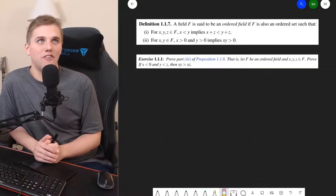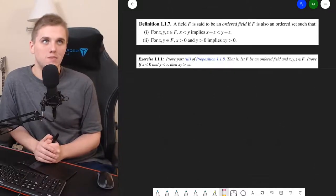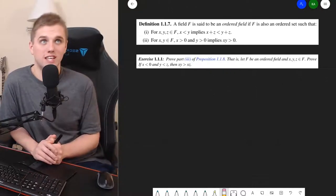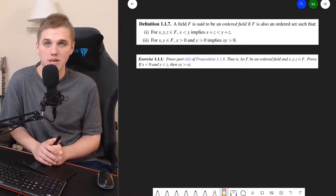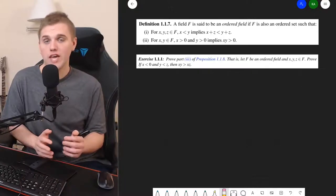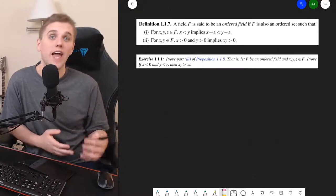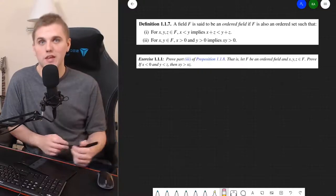That is, let f be an ordered field and x, y, and z be in f. Prove that if x is less than zero and y is less than z, then x times y is greater than x times z. Basically, what we're proving is that if we multiply by a negative number, we have to flip the inequality sign.